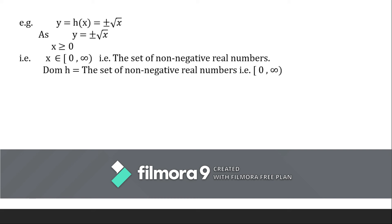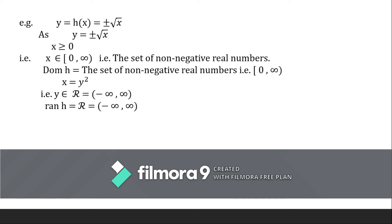Now if we solve Y = ±√X for X by squaring both sides, we get X = Y². Here Y is now the independent variable, so we can assign any value to Y from the set of real numbers: 0, ±1, ±2, ±3, etc. Therefore, the range of the relation H is equal to the set of real numbers, that is (−∞, ∞).